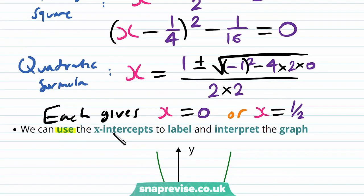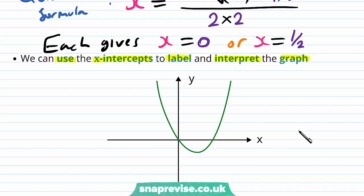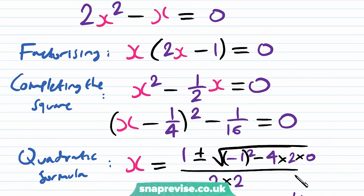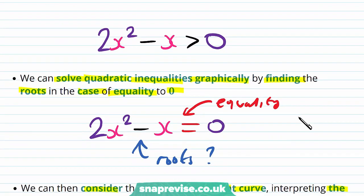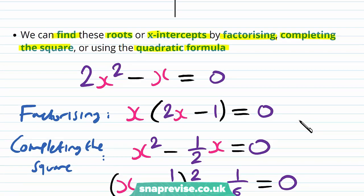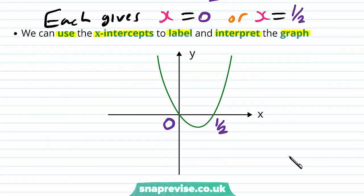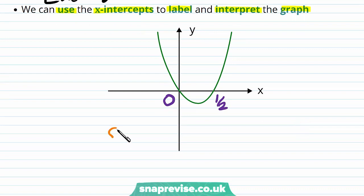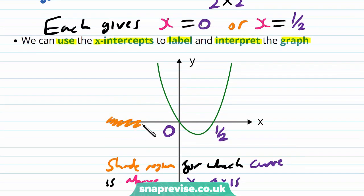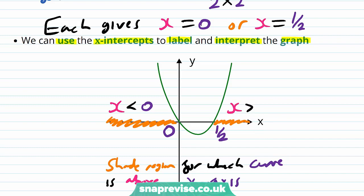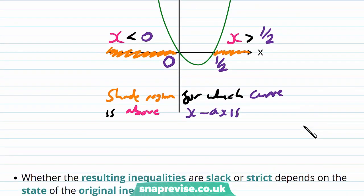We can use the x-intercepts to label and interpret the graph. We have x-intercepts at 0 and ½, and we're looking to find when 2x² - x is strictly positive. We look at our curve and see when it is above the x-axis, shading those regions: x < 0 and x > ½. So the solution to our inequality is x < 0 or x > ½.